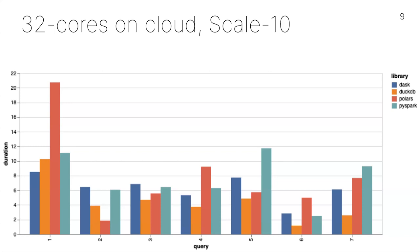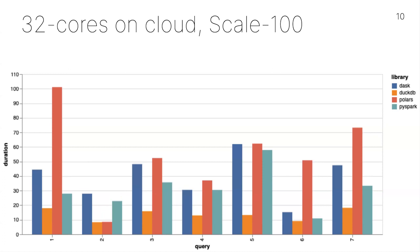Increasing from scale 10 to 100 gigabytes on the same 32-core cloud hardware: Polars stops doing well generally. Worth noting that Polars just added S3 access — they're moving super fast and it's probably not fair to include them yet. The Dask-Spark parity is notable: Dask is about 20-30% slower, not a ton. DuckDB is still doing quite well.